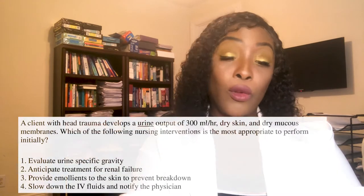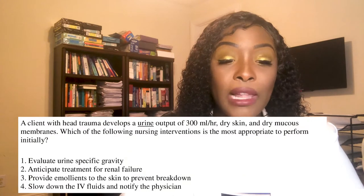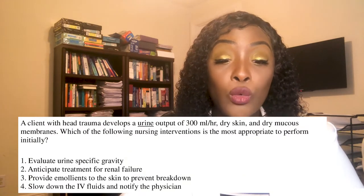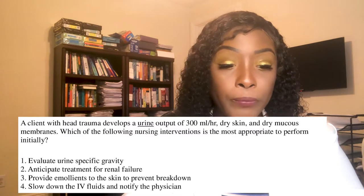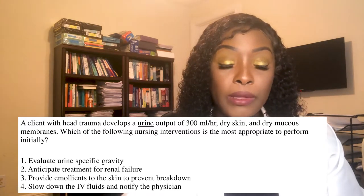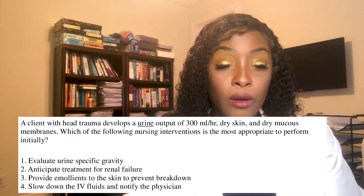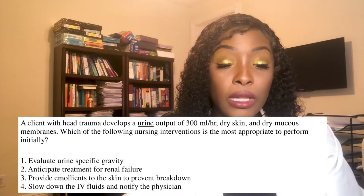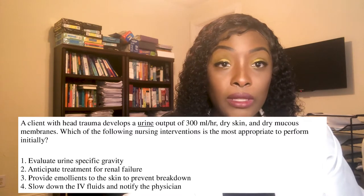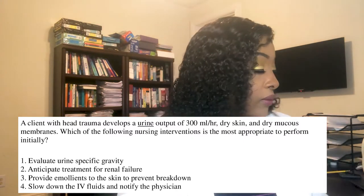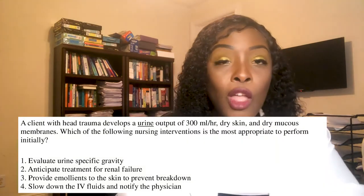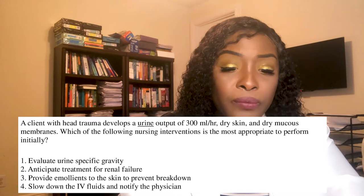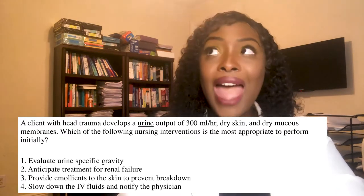Next question: a client with head trauma develops a urine output of 300 milliliters per hour, dry skin, and dry mucous membranes. Which nursing intervention is most important to perform initially? A) Evaluate urine specific gravity. B) Anticipate treatment for renal failure. C) Provide emollients to the skin to prevent skin breakdown. D) Slow down the IV fluids and notify the physician.